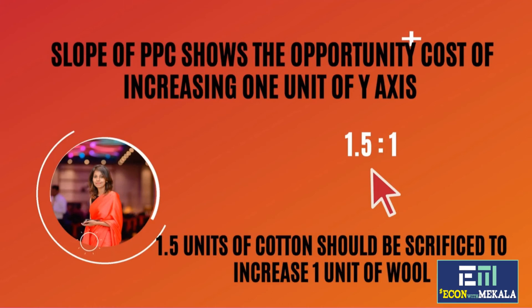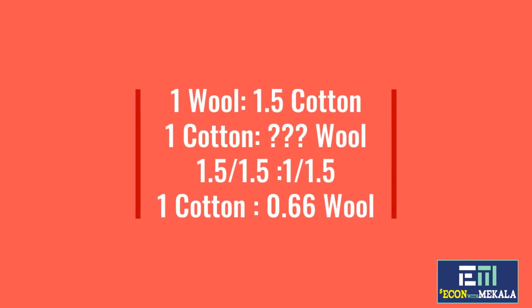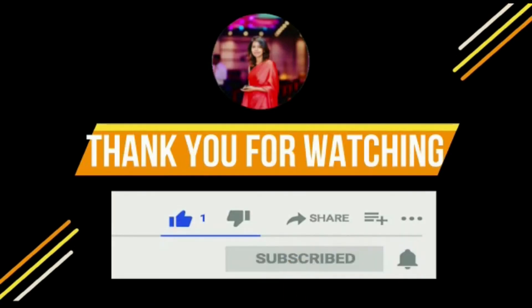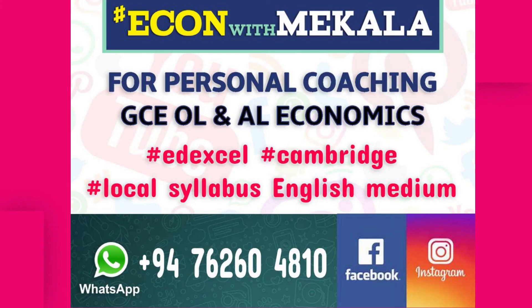Let's say someone wants to find out what is the opportunity cost of producing one unit of cotton. Without constructing another PPC, using the same ratio, we can do that. If you take 1.5 to 1, you can divide both sides by 1.5. Then we get, for one unit of cotton, how much wool we should sacrifice. The opportunity cost is 0.66 units of wool per unit of cotton.